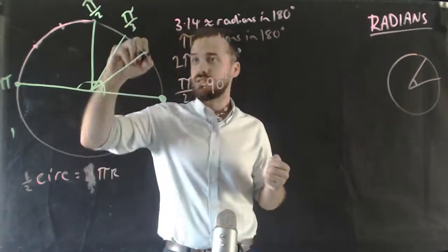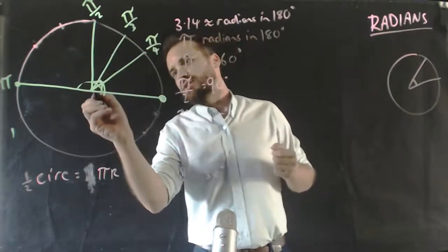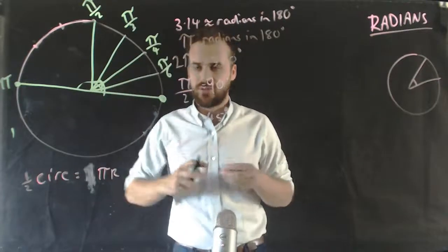or 45 degrees, is pi on 4 radians. And this angle is pi on 6 radians.